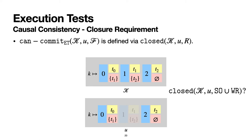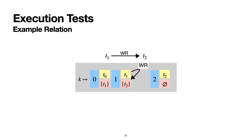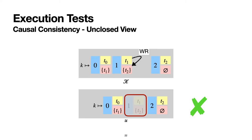Assume the key-value store we saw before, and another client whose view contains only the first and last versions. Causal consistency requires that the view is closed with respect to session order union write-read. In the key-value store, we observe a write-read edge from transaction T1 to transaction T2.